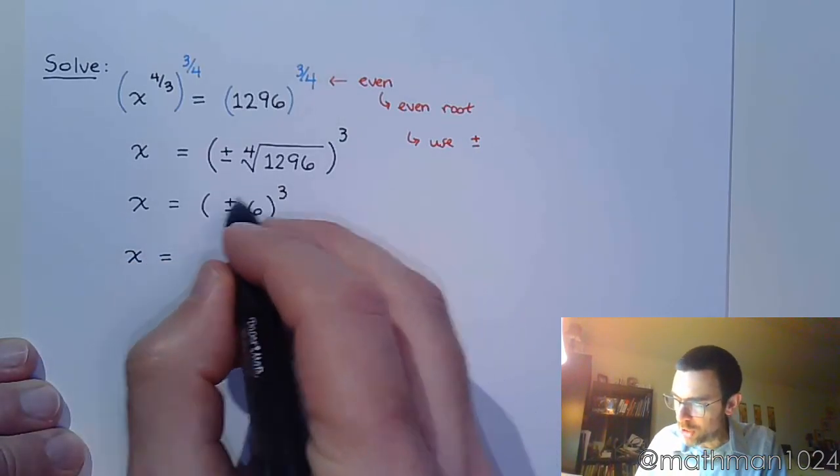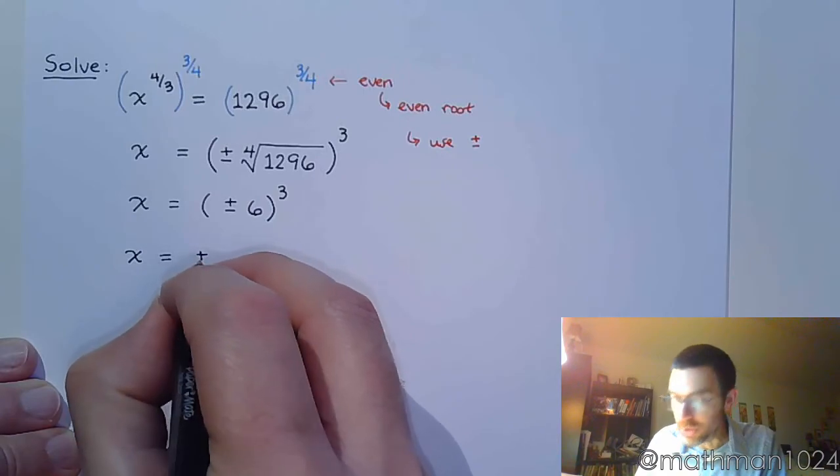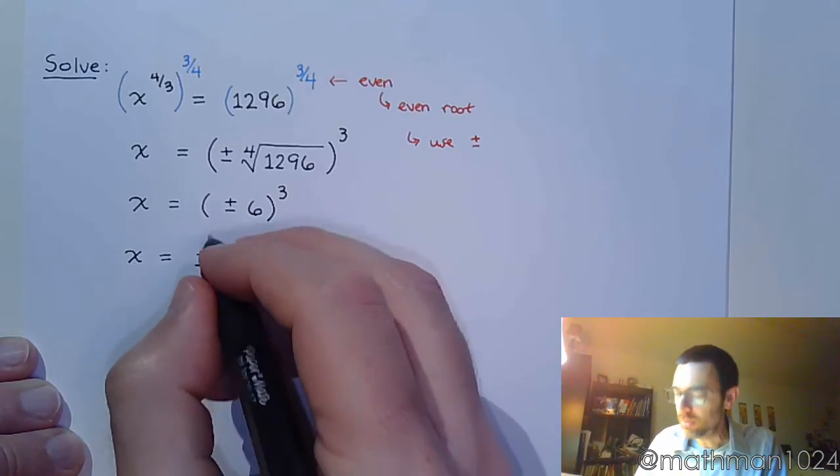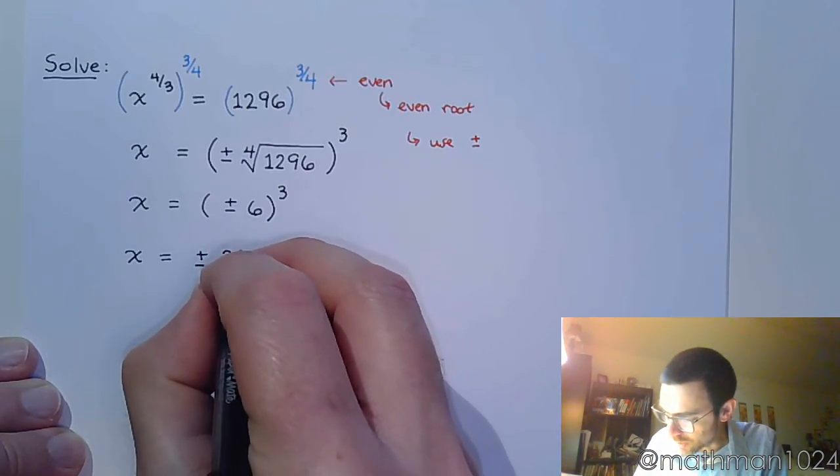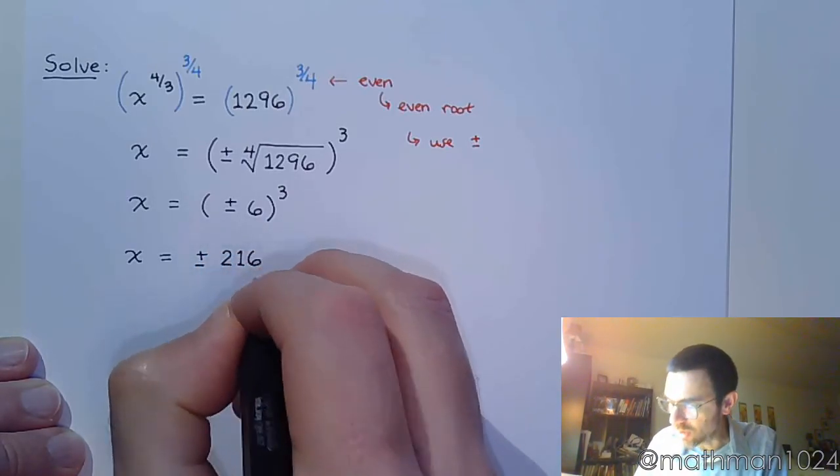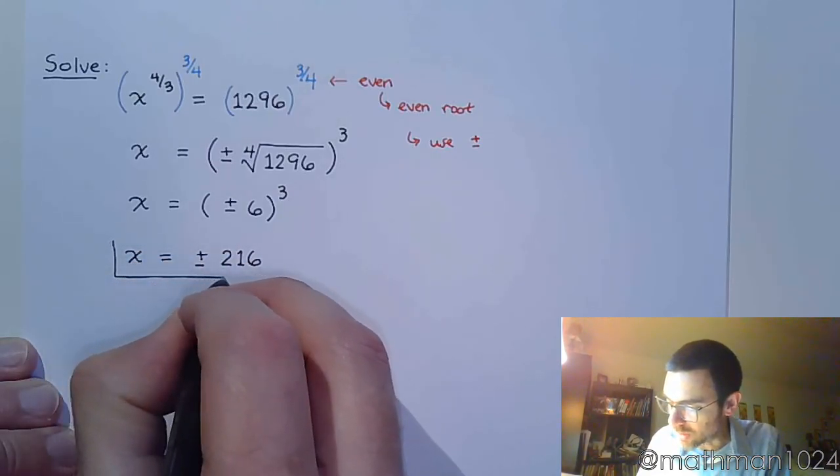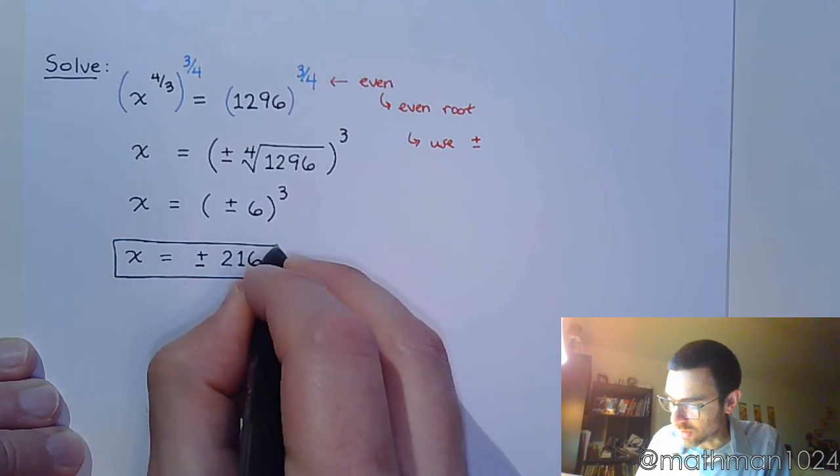Well, not too bad. If you keep a positive, you get a positive; if you keep a negative, you get a negative. And six to the third - you can look at your list of powers and you're going to see that that is 216. So there are actually two solutions here: plus or minus 216.